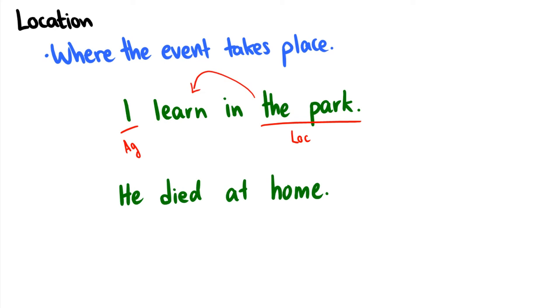Another example would be he died at home. He, in this case, with death, you don't really have an agent. You don't have an initiator. But you do have to have someone sentient. Sure, we can say this is an agent or an experiencer here, depending on whether it's suicide or not. And then you have he died at home. So home is your location. This is where the dying is taking place. This is not a goal. This is just a location.